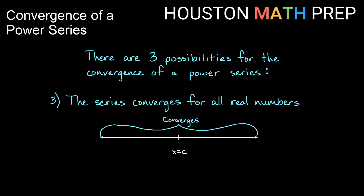The third possibility is not converging just at a point or at some piece of the number line, but rather that the series will converge for all real numbers — it will converge for any value of x we put into the series, for the entire real number line.